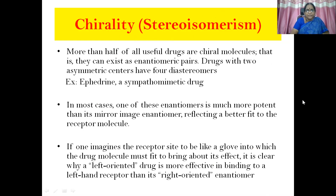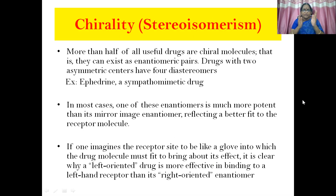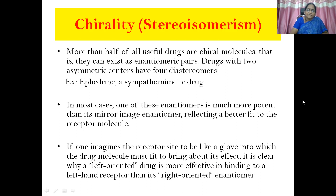Then, chirality or stereoisomerism. More than half of all useful drugs are chiral molecules — that is, they can exist as enantiomeric pairs. Drugs with two asymmetric centers have four diastereoisomers; for example, ephedrine, a sympathomimetic drug. Enantiomers means mirror images. A pair of enantiomers are like mirror images of each other, and they are called chiral molecules when they cannot be exactly overlapped on the other enantiomer. In most cases, one of these enantiomers is much more potent than its mirror image enantiomer, reflecting a better fit to the receptor molecule.